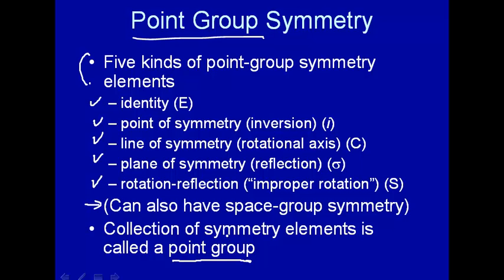So point, we know what that means. A group, it's more than just a collection of things. A group is a mathematical concept, and it has certain mathematical properties, and so on. So we're using this group in a mathematical sense here, in addition to just a collection of things. So with that brief introduction to point group symmetry, we're going to go and talk in detail about these five symmetry elements that you find in point group symmetry.